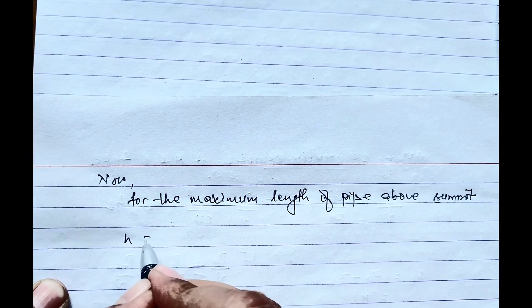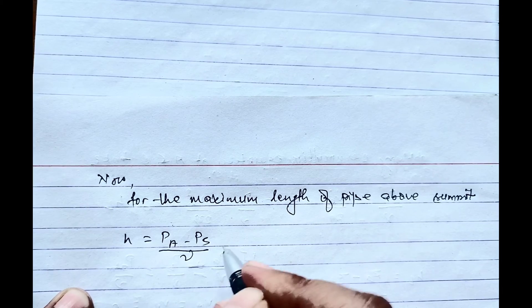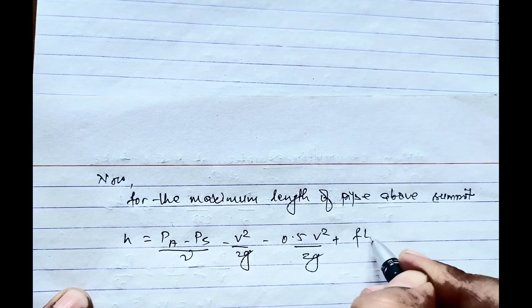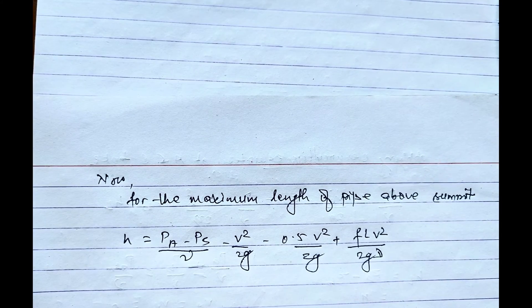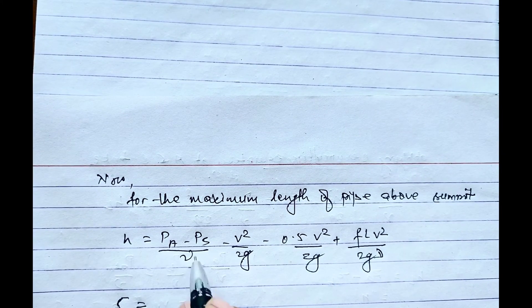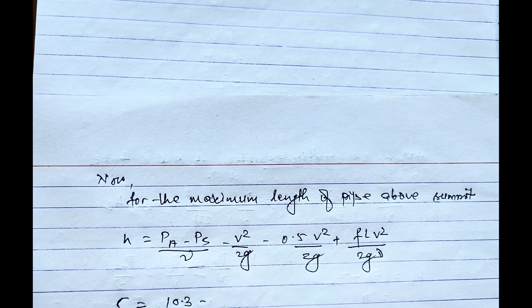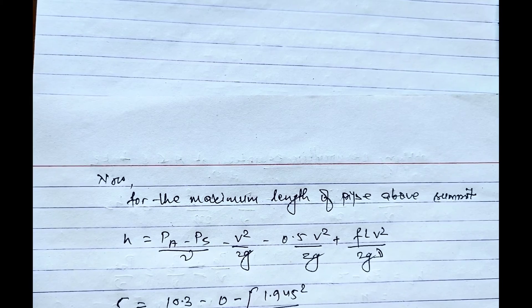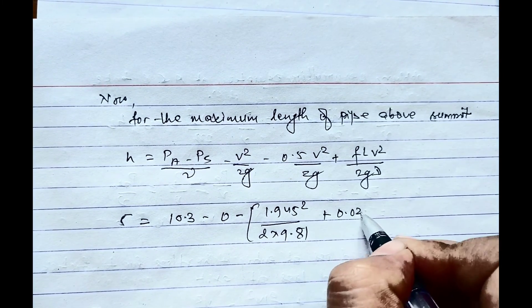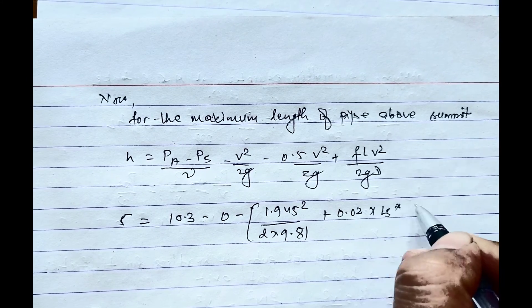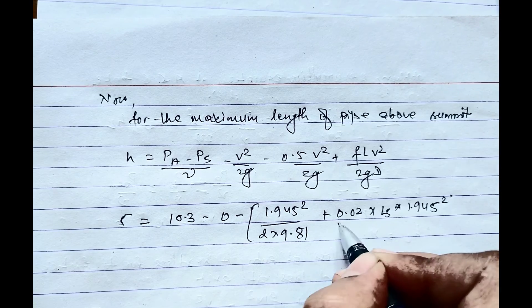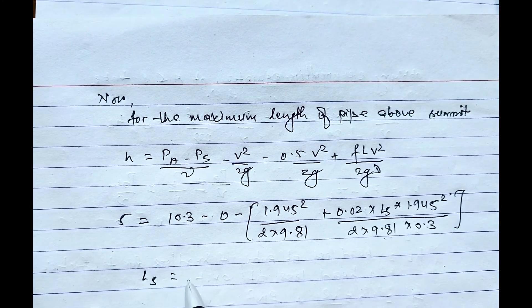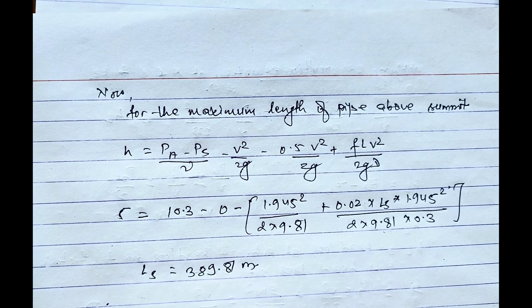H equals (Pa - Ps)/γ - V²/2g - 0.5V²/2g + fLV²/2gd. Now placing the value: 5 equals the atmospheric pressure 10.3 minus 0 minus 1.945²/(2 × 9.81) plus 0.02 × L of summit × 1.945²/(2 × 9.81 × 0.3). On solving this, the length of summit is 389.81 meters, that is the maximum length of pipe up to summit from reservoir.